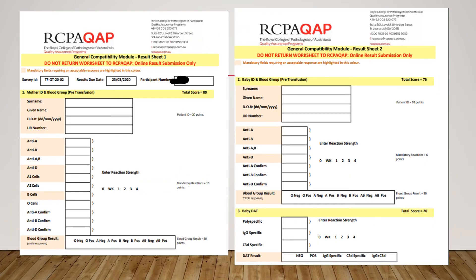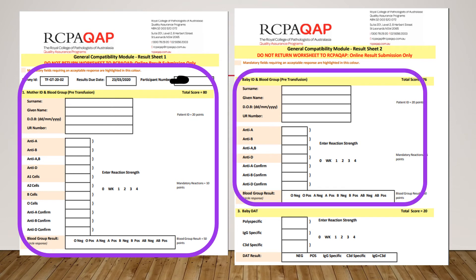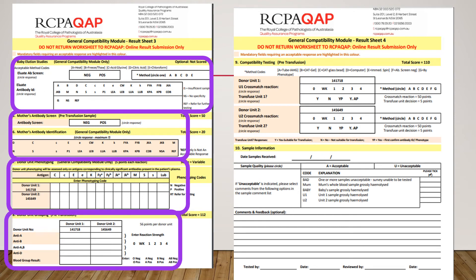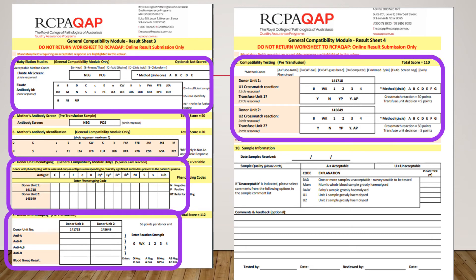This is another result template for RCPA. Every year, RCPA challenges participants with a different type of case. This one is a feto-maternal case in which two patient samples consist of a mother and baby. The case requires the participant to perform blood grouping for the mother and baby, followed by DCT test for the baby. If DCT is positive, the participant is required to perform baby elution studies and proceed to antibody identification if indicated. At the same time, the mother is screened for antibody screening and antibody identification if indicated. Donor unit phenotyping and donor blood grouping are then performed. Finally, the participant must perform cross-matching for the mother with donor samples and record the decision whether to transfuse or not. All results must be submitted online.